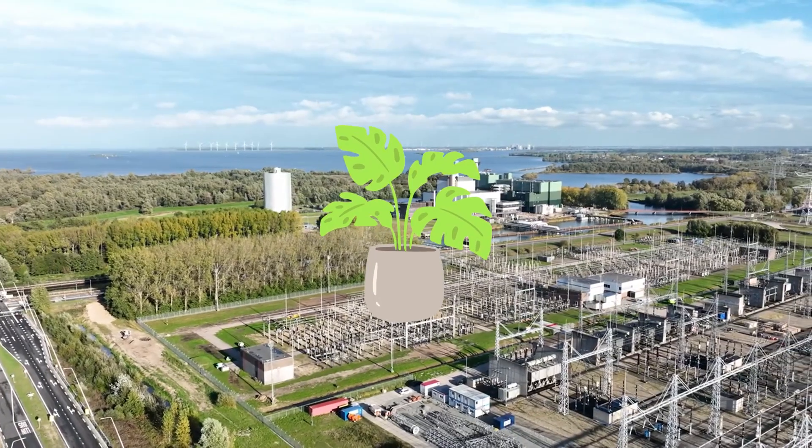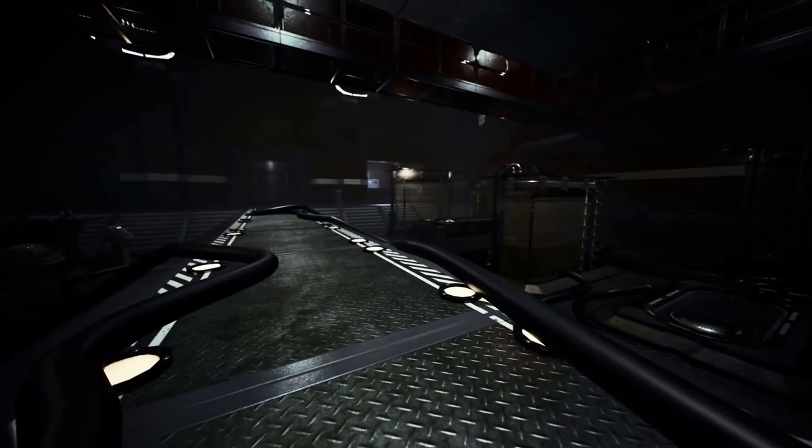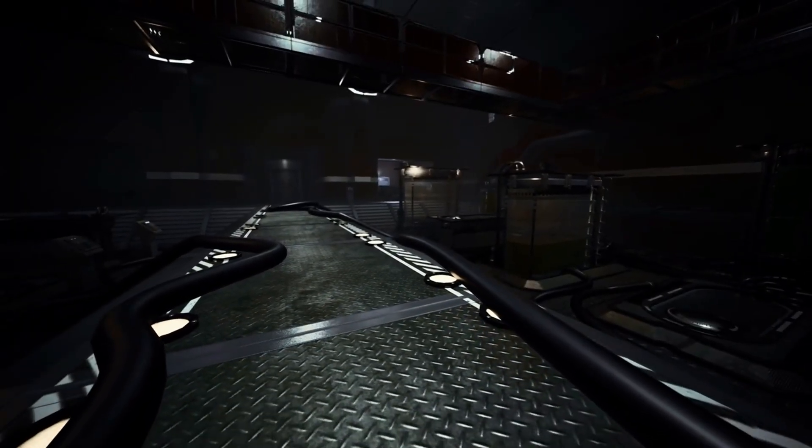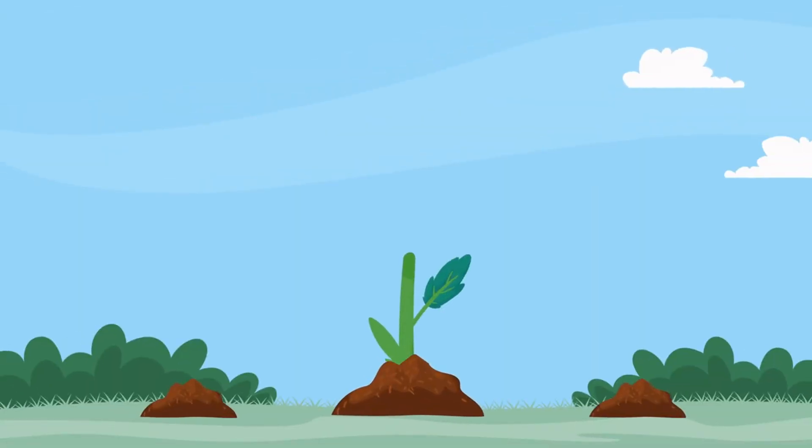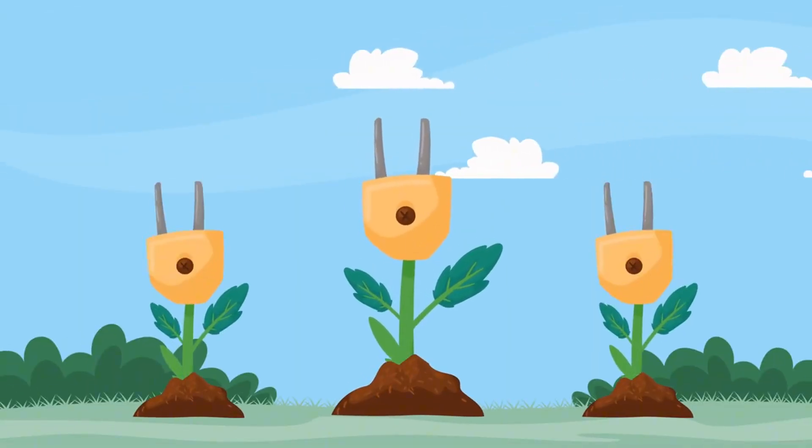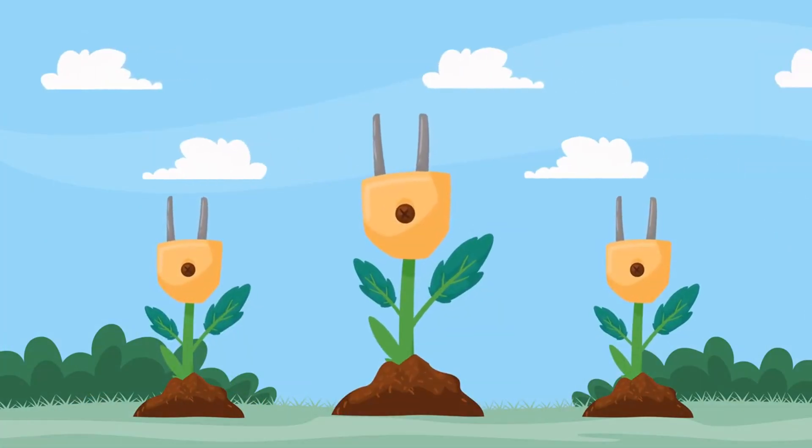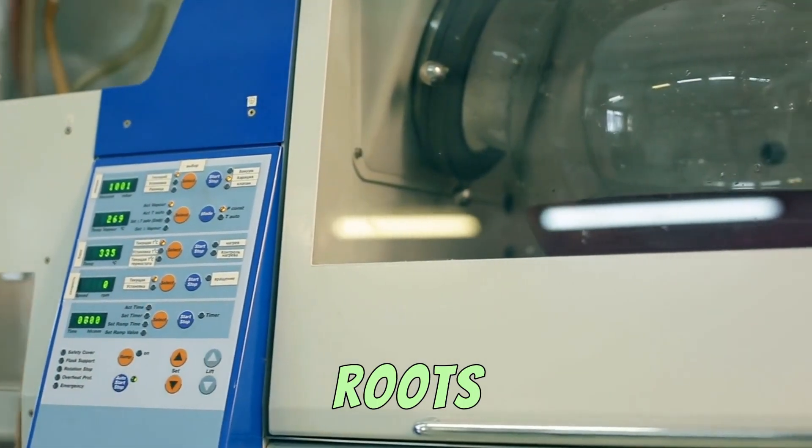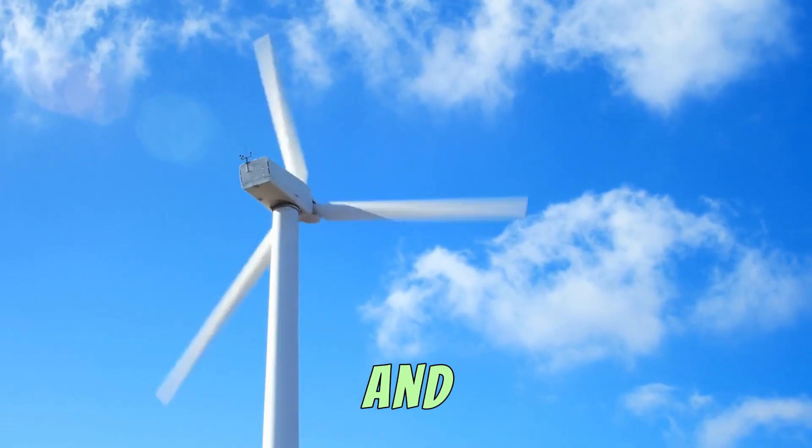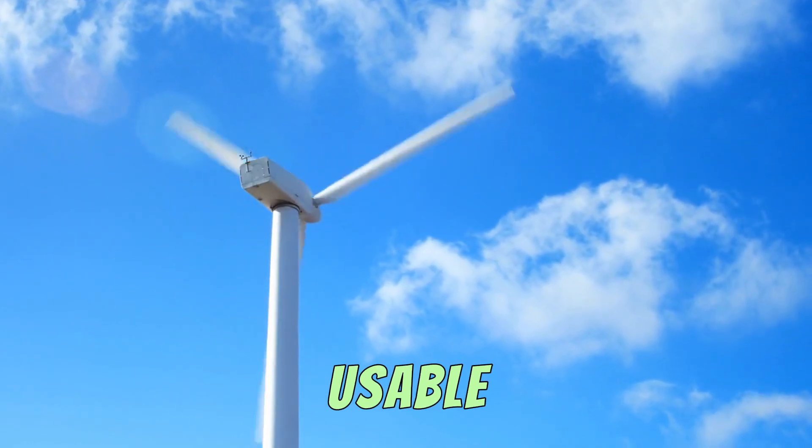What if plants could power your home? As strange as it sounds, scientists have found a way to generate electricity from plants. Certain plants release tiny electrical currents through their roots when they absorb nutrients from the soil. By placing electrodes near the roots, researchers can capture these currents and convert them into usable energy.